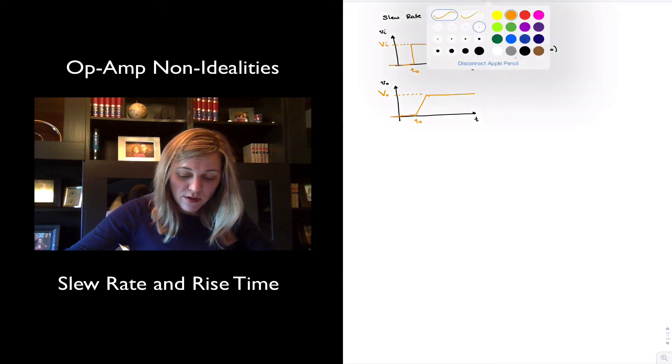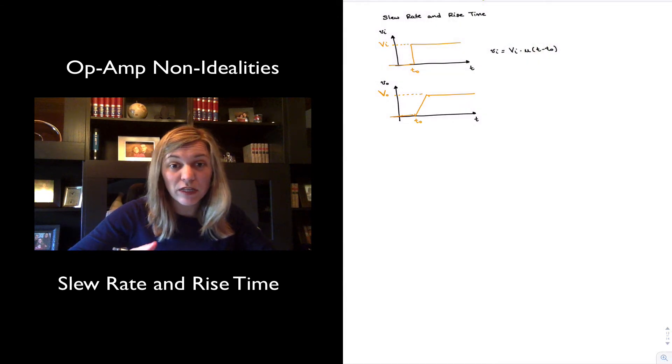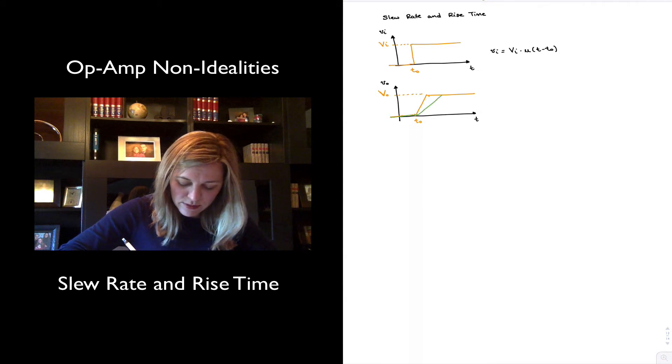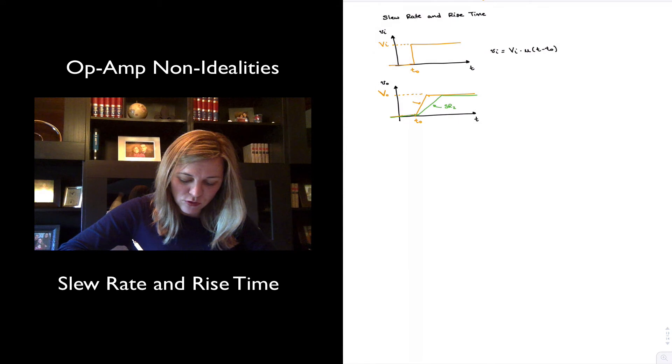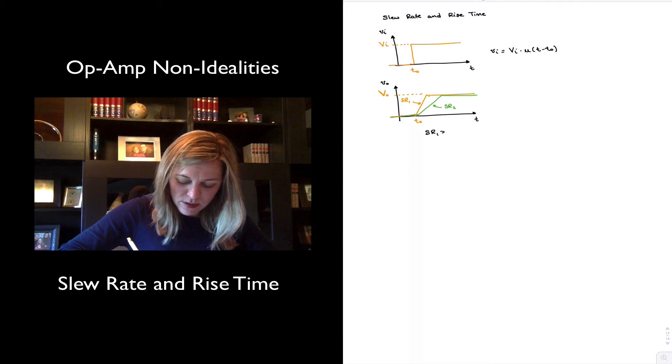That will be the final value capital Vout. Now, for an amplifier that has a smaller slew rate, meaning its output cannot change as fast, I will have something like this. This will be the slew rate of amplifier 2, the first one will be the slew rate of amplifier 1, SR1, where SR1 is greater than SR2.